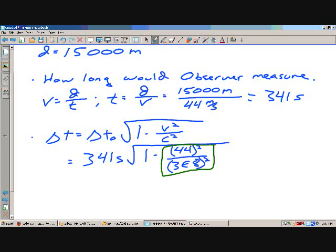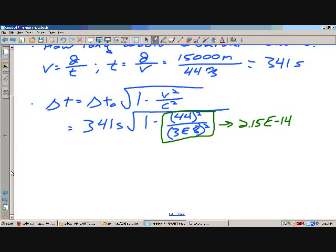Calculator fun. Again, this term is going to be really small. 44 squared, 3E to the 8th squared. This term is 2.15 times 10 to the negative 14th. When we take 1 minus this number, most calculators, unless they go 15, 20 decimal places, is going to give you the answer of 1. If you're using a computer, like an Excel spreadsheet, it can work it out that many decimal places, but otherwise, it's going to give you an answer of 1.